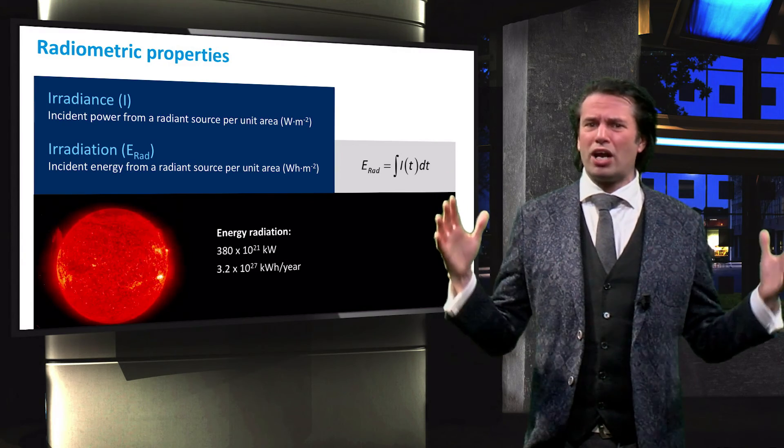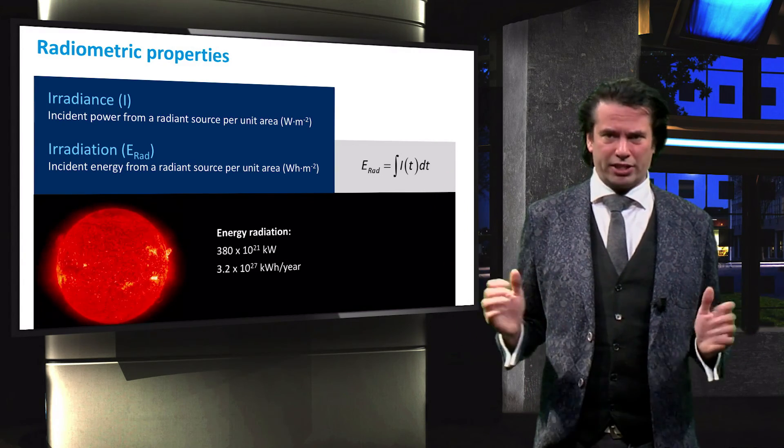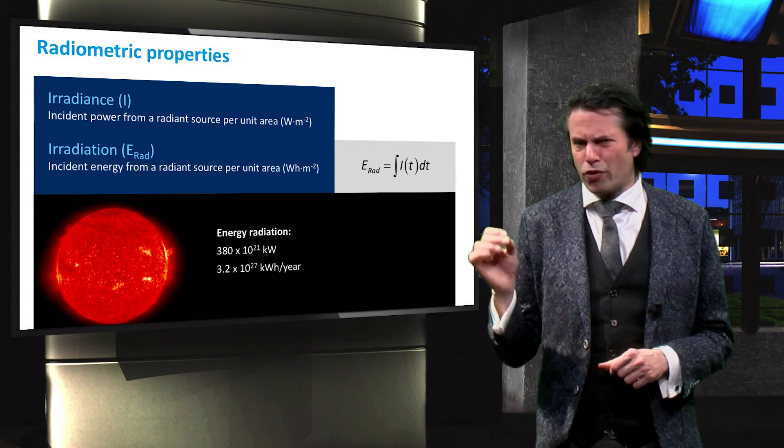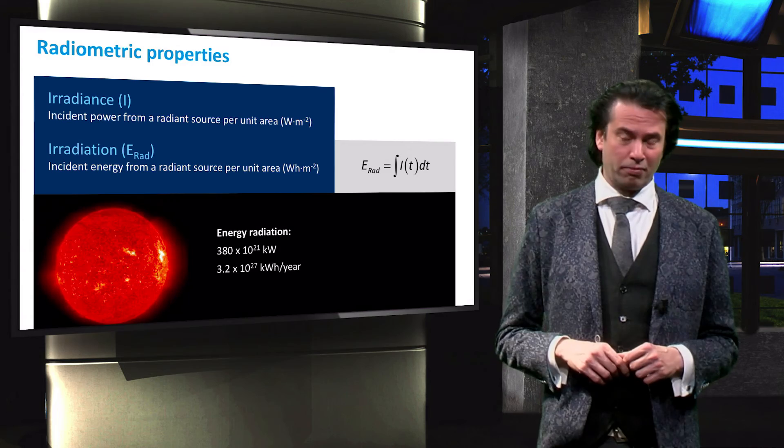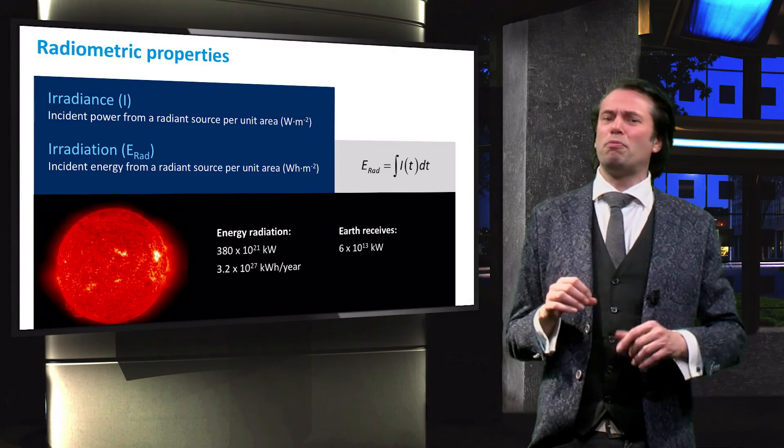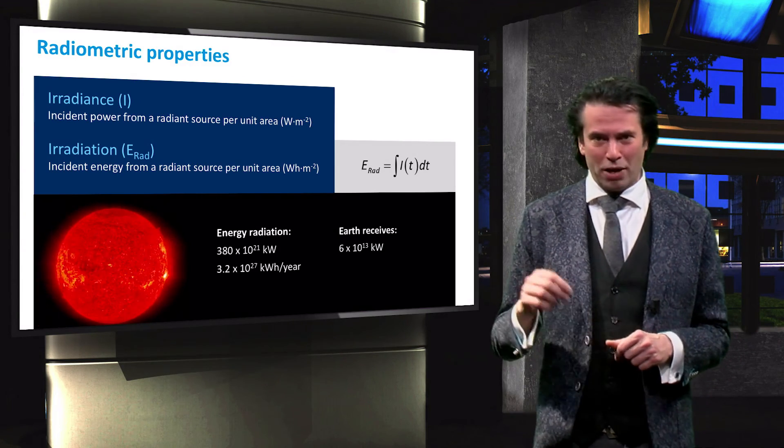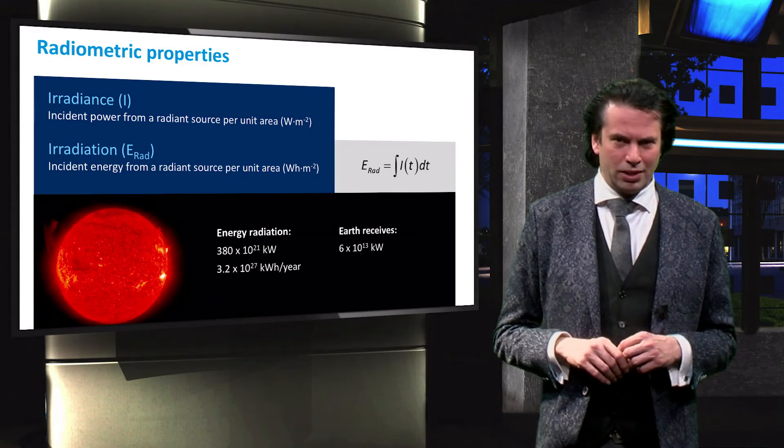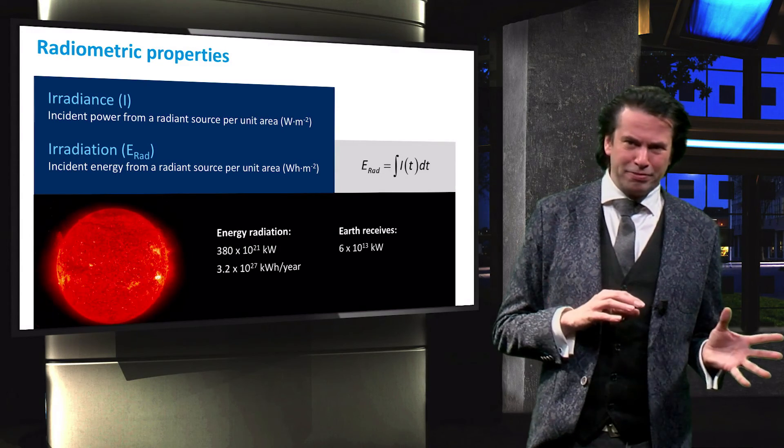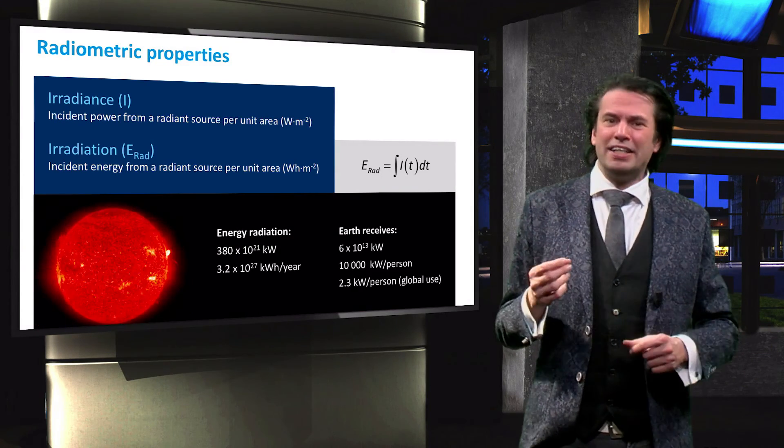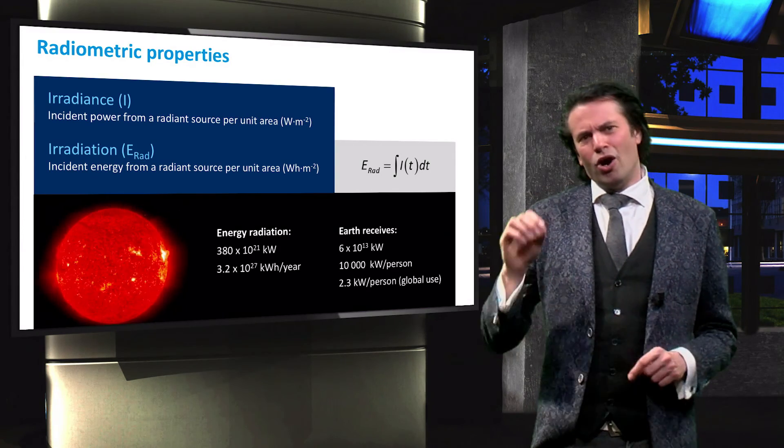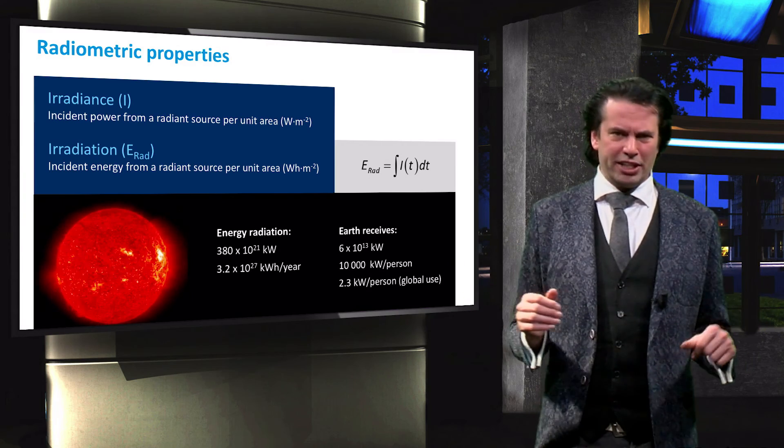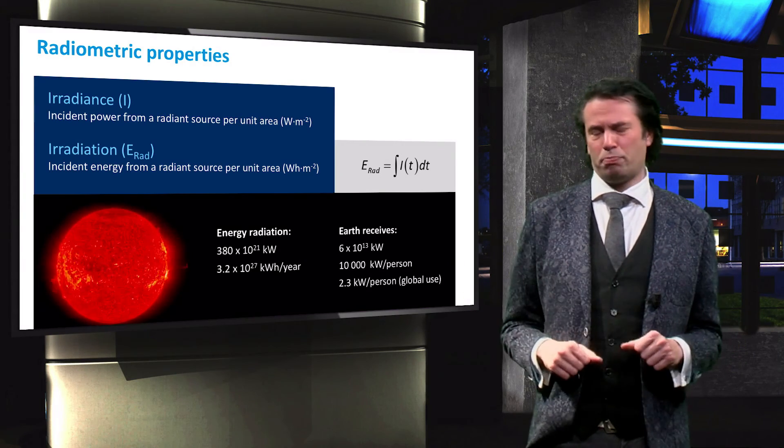The sun emits light more or less equally in all outgoing directions. Earth, therefore, only receives a tiny fraction of the power radiated by the sun. This tiny fraction sums to about 6 times 10 to the power 13 kW. To put that into perspective, this equates to roughly 10,000 kW per person on planet earth. Our global average power consumption is about 2.3 kW per person.